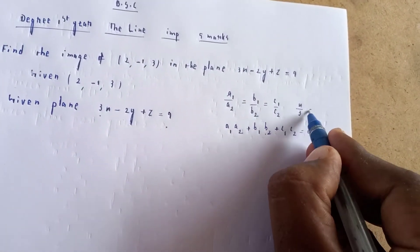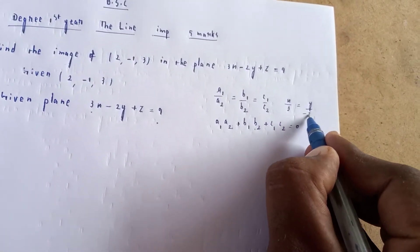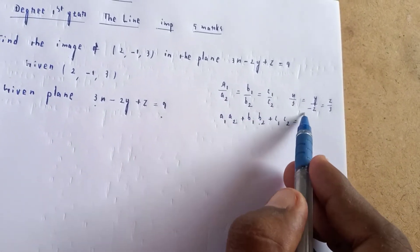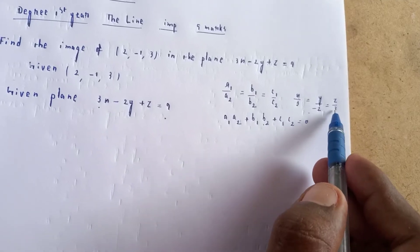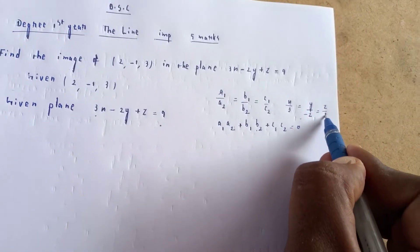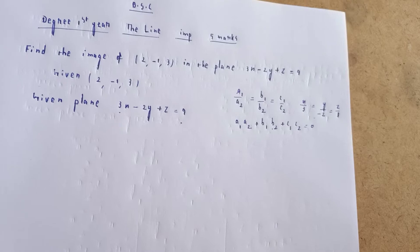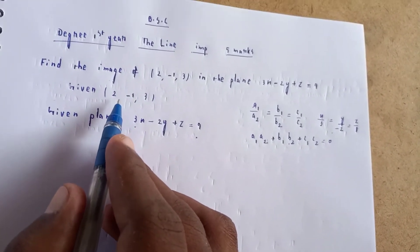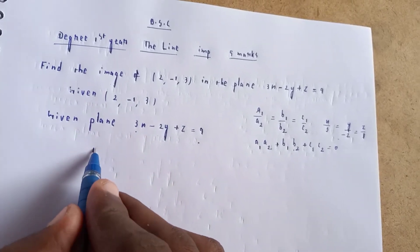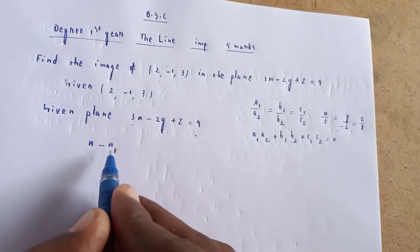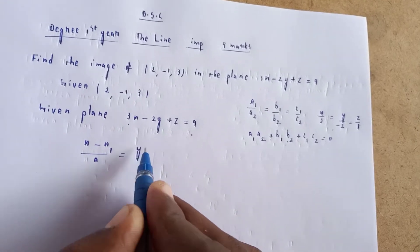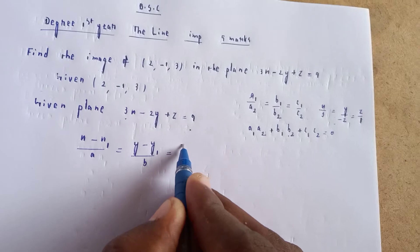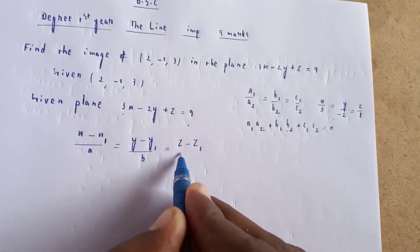The perpendicular line equation becomes x/3 = y/(-2) = z/1. Now, using the formula for a line through a point: (x - x1)/a = (y - y1)/b = (z - z1)/c.